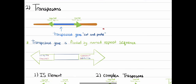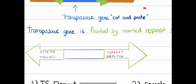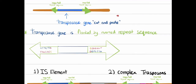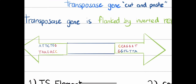The transposon gene is located inside the transposon. The sequence required to eventually translate it is located on the transposon itself. Transposons are flanked by inverted repeat sequences — 'flanked' meaning the sequences are kind of flipped around on either side of the transposon.